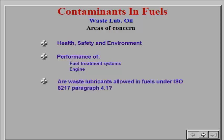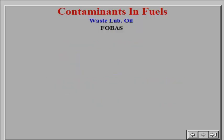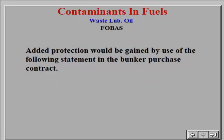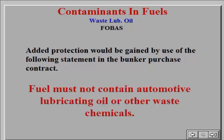Are waste lubricants allowed in fuels under ISO 8217, paragraph 4.1? How can we detect waste lubricants in fuel? Added protection should be gained by use of the following statement in the bunker purchase contract: fuel must not contain automotive lubricating oil or other waste chemicals.